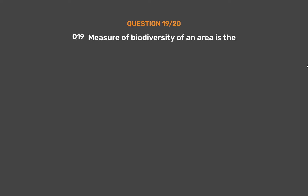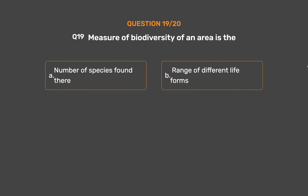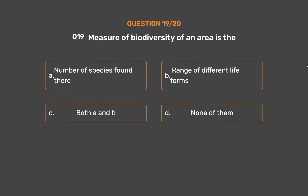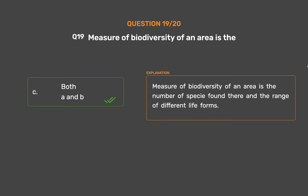Question number 19: Measure of biodiversity of an area is the — Option A: Number of species found there, Option B: Range of different life forms, Option C: Both A and B, Option D: None of them. The correct answer is Option C, Both A and B. Measure of biodiversity of an area is the number of species found there and the range of different life forms.